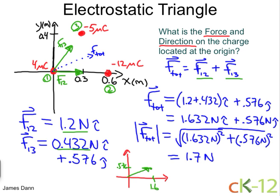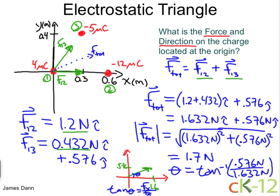Very good. Now we know the magnitude. Now, to find this angle, well, we can use tan theta because - and I'll write it right below here - tan theta equals opposite, which is Fy, the y component of the force, over the adjacent, which is the x component of the force. Therefore, theta is equal to the inverse tan of 0.576 Newtons divided by the 1.632 Newtons. And we get an answer of 19 degrees.